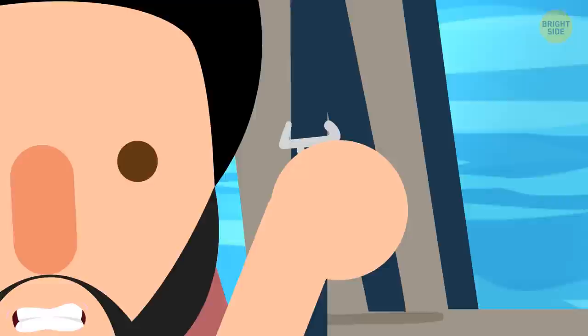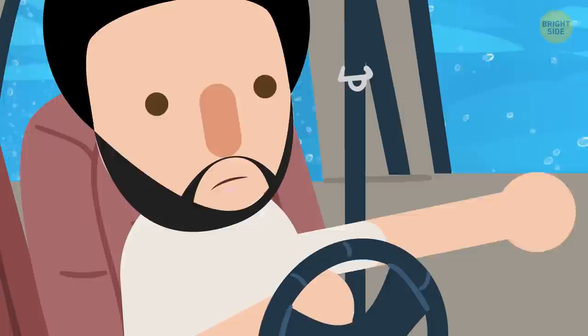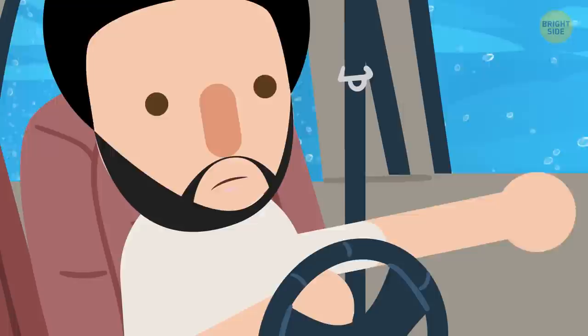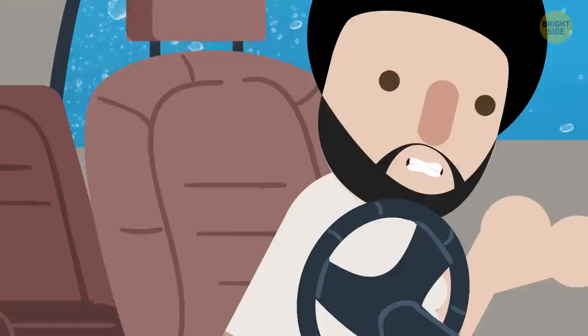You need to act fast and roll down the window. As you take off your seatbelt, you notice the water has risen above the windows. You try to roll them down, but they're stuck in place from the pressure. You've missed your opportunity. You're sinking further down and thinking about opening the door. Better not. This will make your vehicle sink even faster. Plus, it'll be more dangerous to exit.